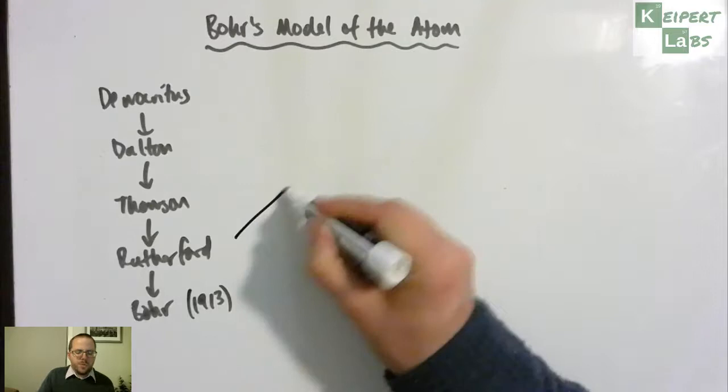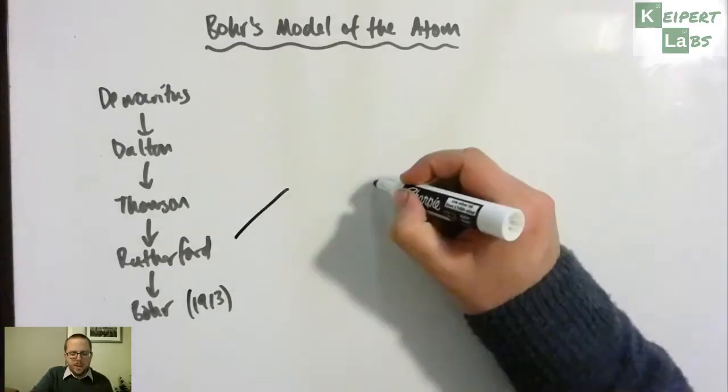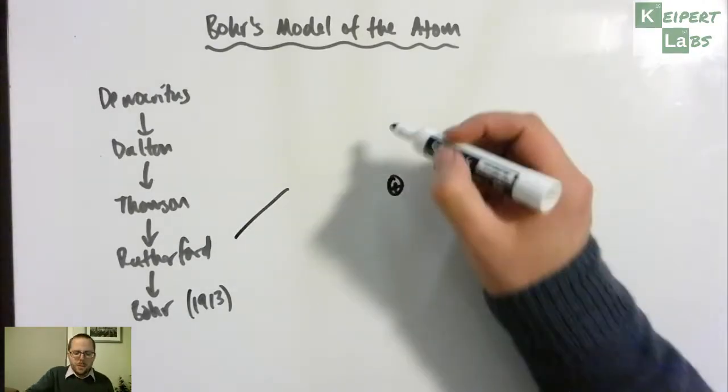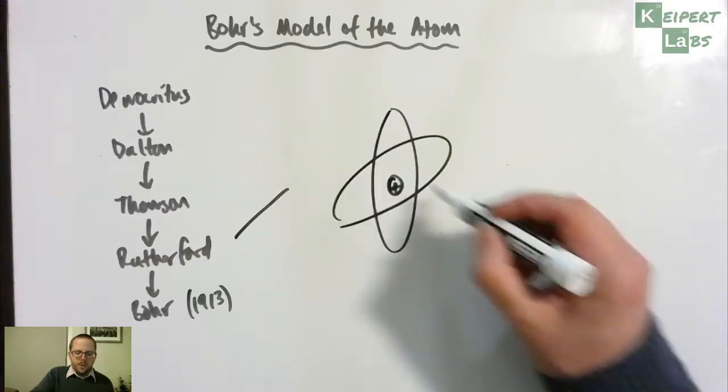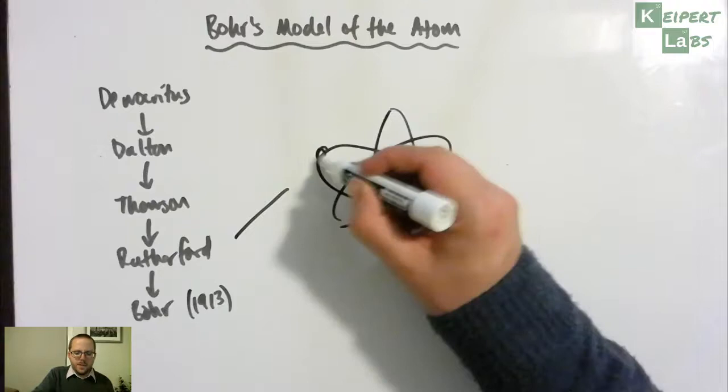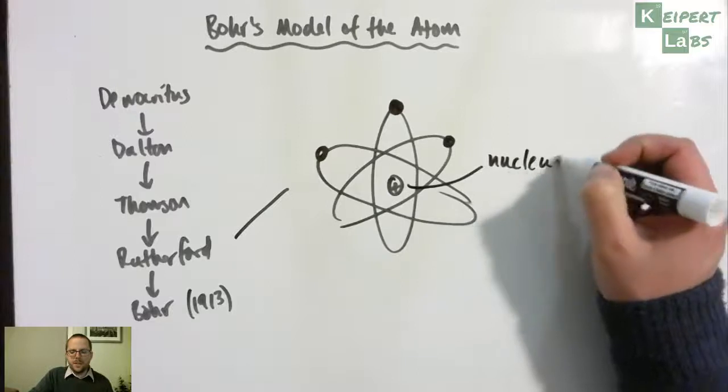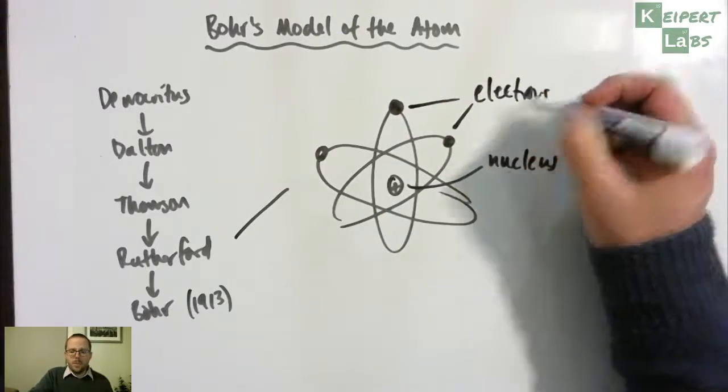Looking at Rutherford's model of the atom, in Rutherford's model we have a positively charged nucleus surrounded by electrons that orbit around the outside. If each of these black dots represents an electron, this bit in the middle is the nucleus and these are our electrons orbiting.